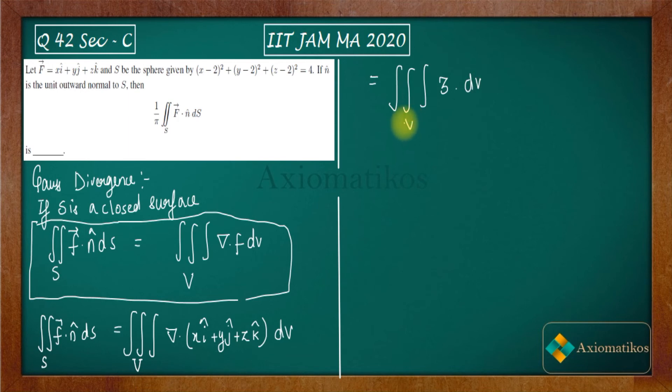What is this V? V is the volume enclosed by this surface S. Now, what is this surface? It's a sphere. And for a sphere, we already know the volume. It's four by three pi r cubed. What is r in your case? It is two.